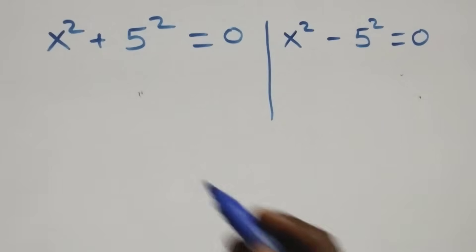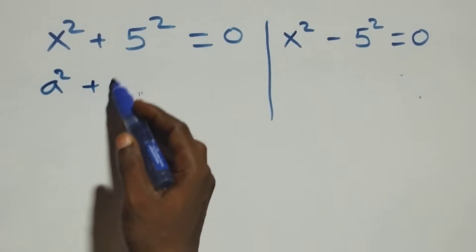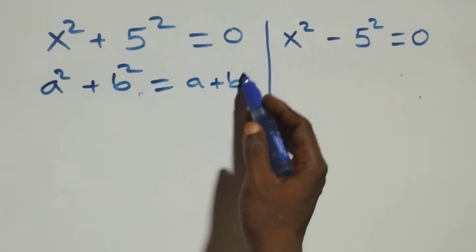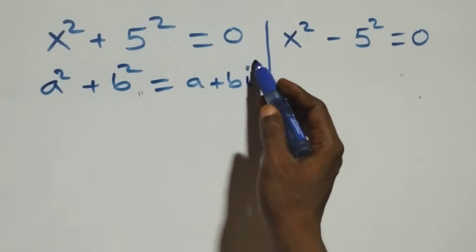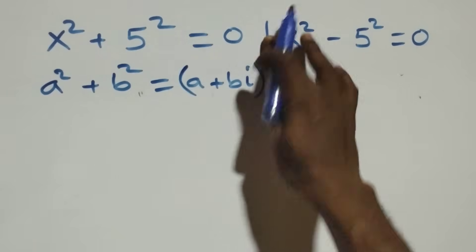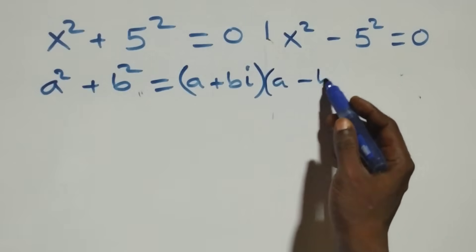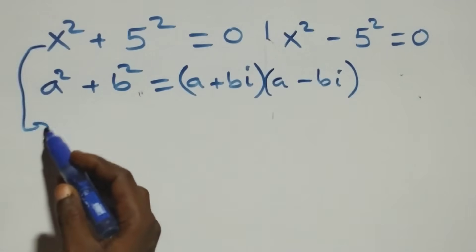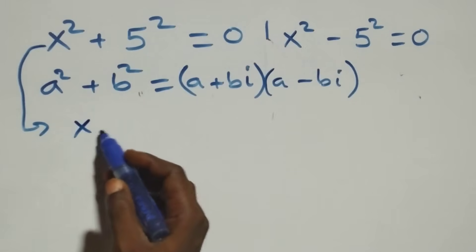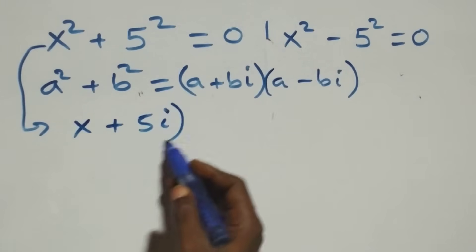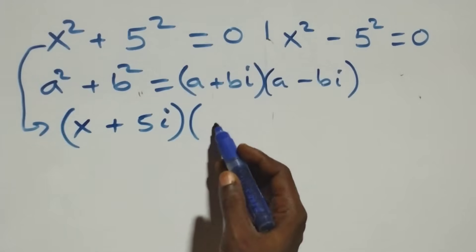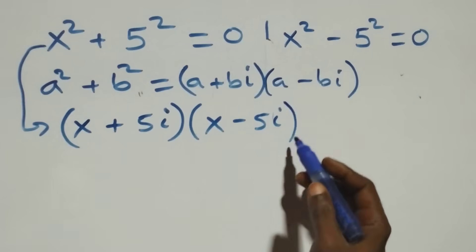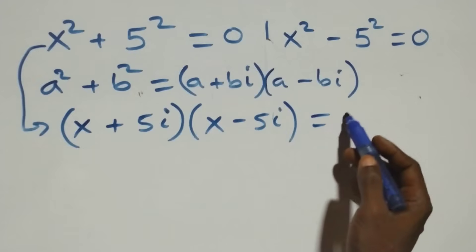Solving the first case, x squared plus five squared equals zero. This follows the sum of squares factoring: a squared plus b squared equals (a + bi)(a - bi). So this becomes (x + 5i)(x - 5i) equals zero.